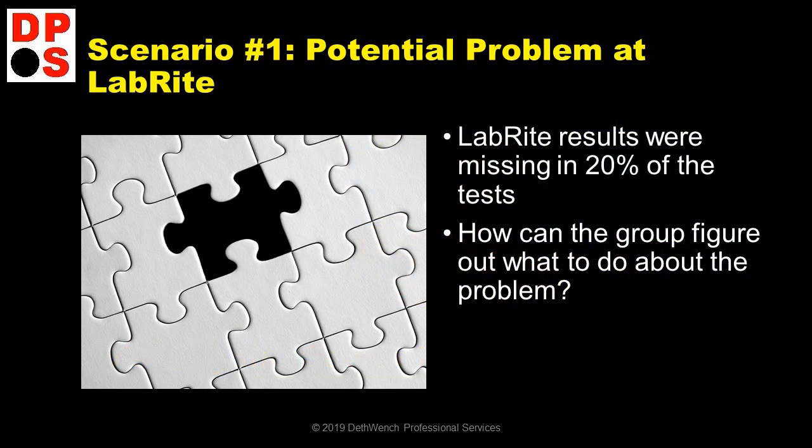In the first scenario, there was a potential problem at LabRite. Although the other two labs were testing specimen without any problem, the reports from LabRite were coming back with a message that there was not enough specimen to test. So, what could the group do about the problem?